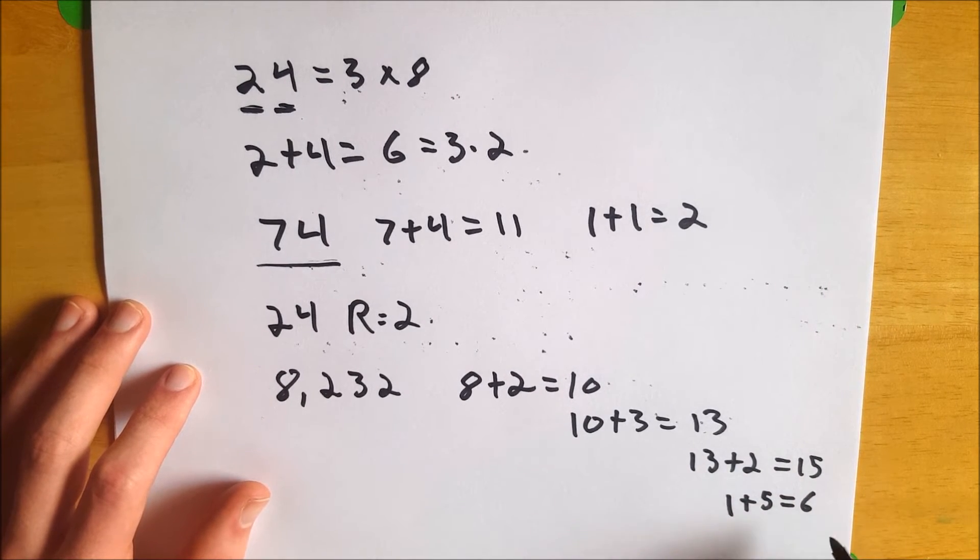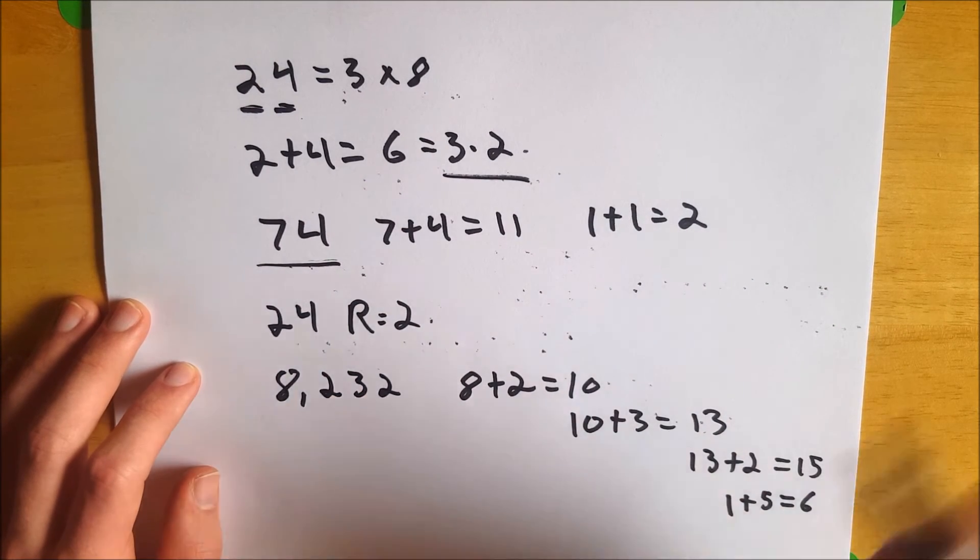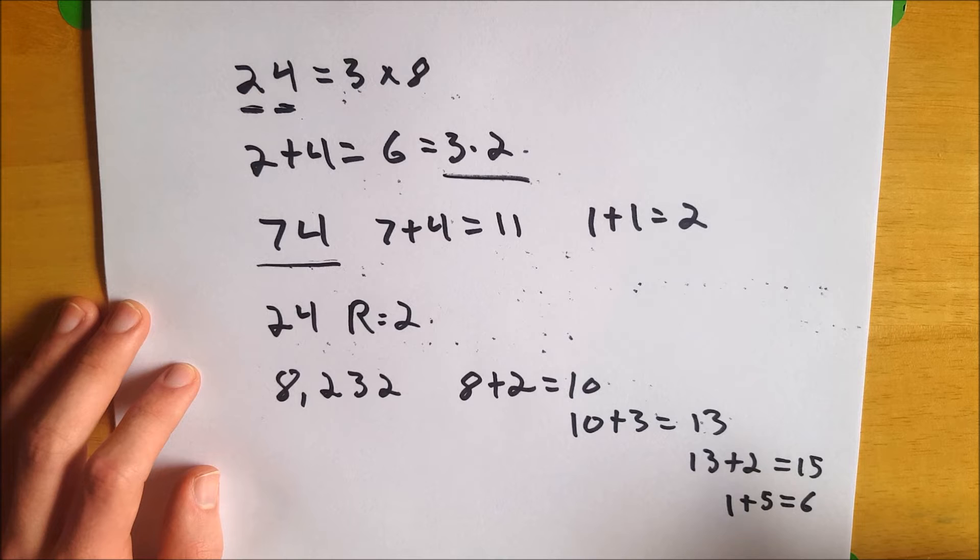6 is divisible by 3, as we set up here. So 8,232 is also divisible by 3.